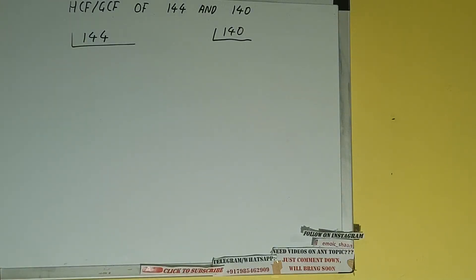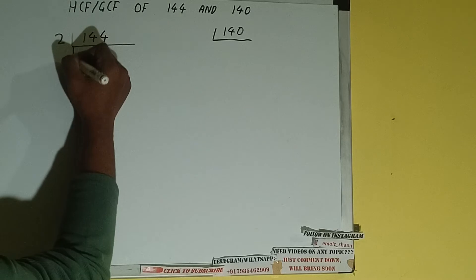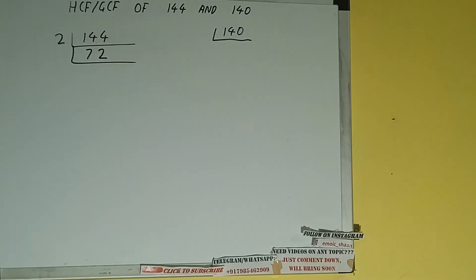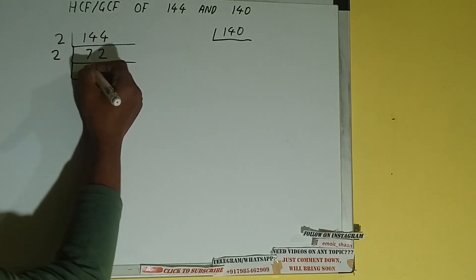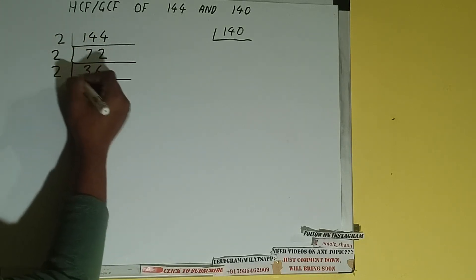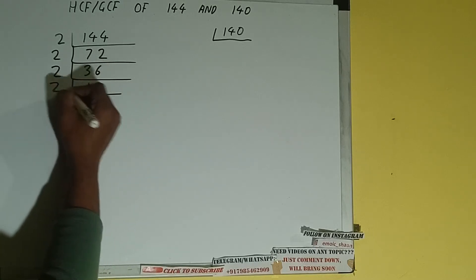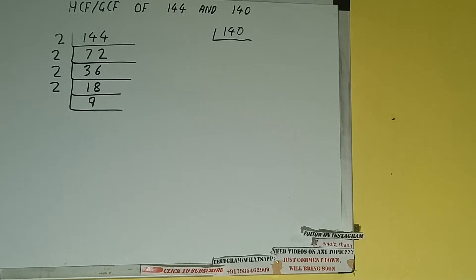Let's start with 144. We'll check with the lowest prime number 2 — is 144 divisible by 2? Yes it is, because the number is even. So we divide it and we'll get 72. 72 is again divisible by 2, and we'll get 36. 36 is again divisible by 2, giving us 18. 18 is again divisible by 2, giving us 9. Now 9 is not divisible by 2 because it is an odd number.